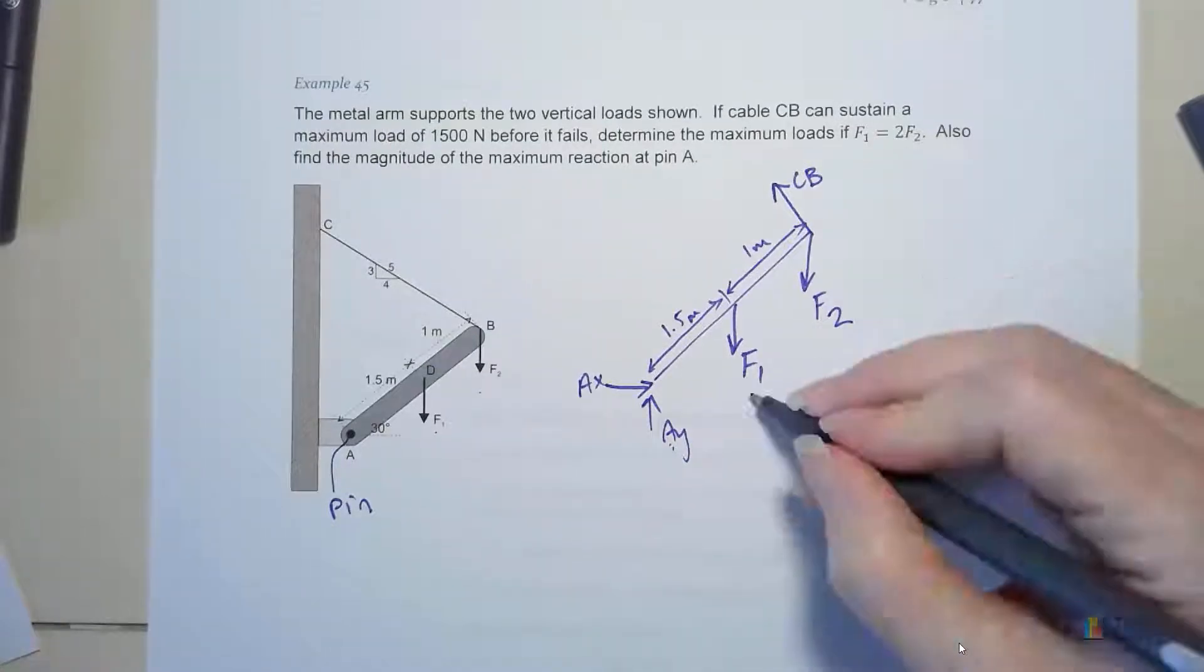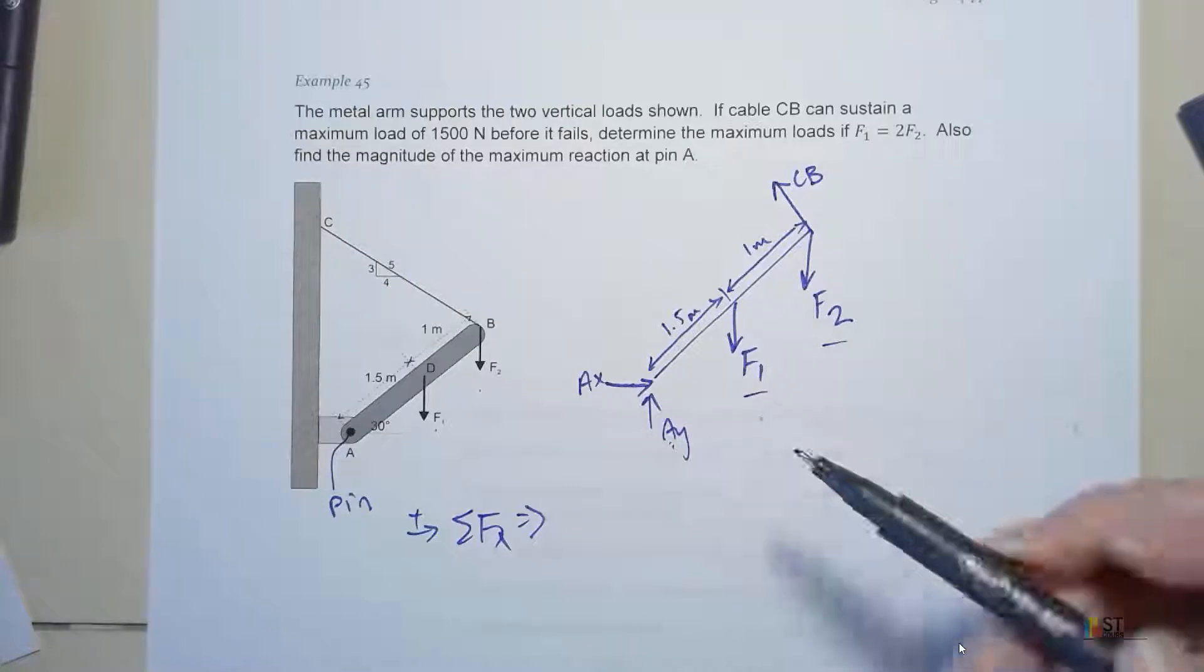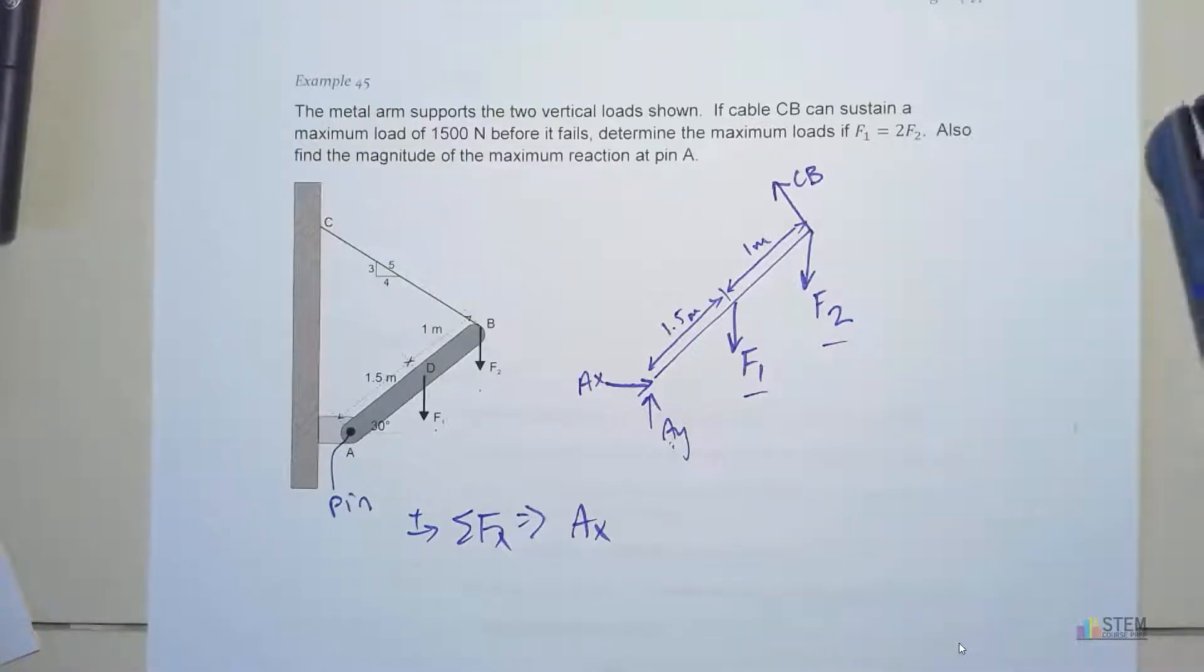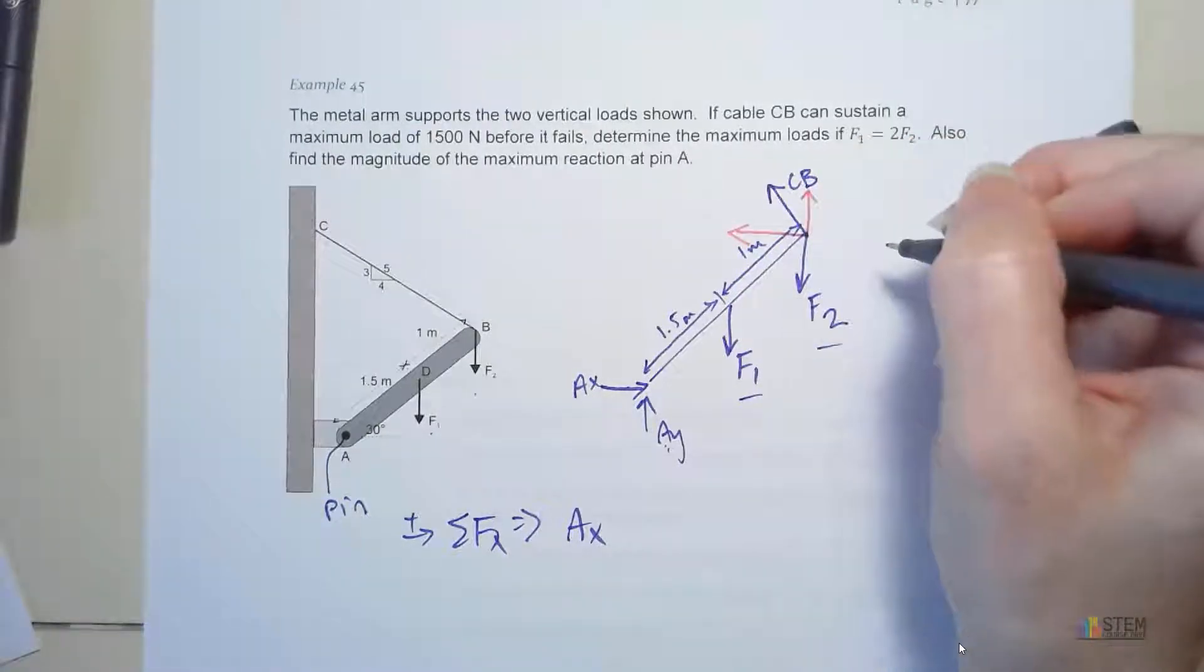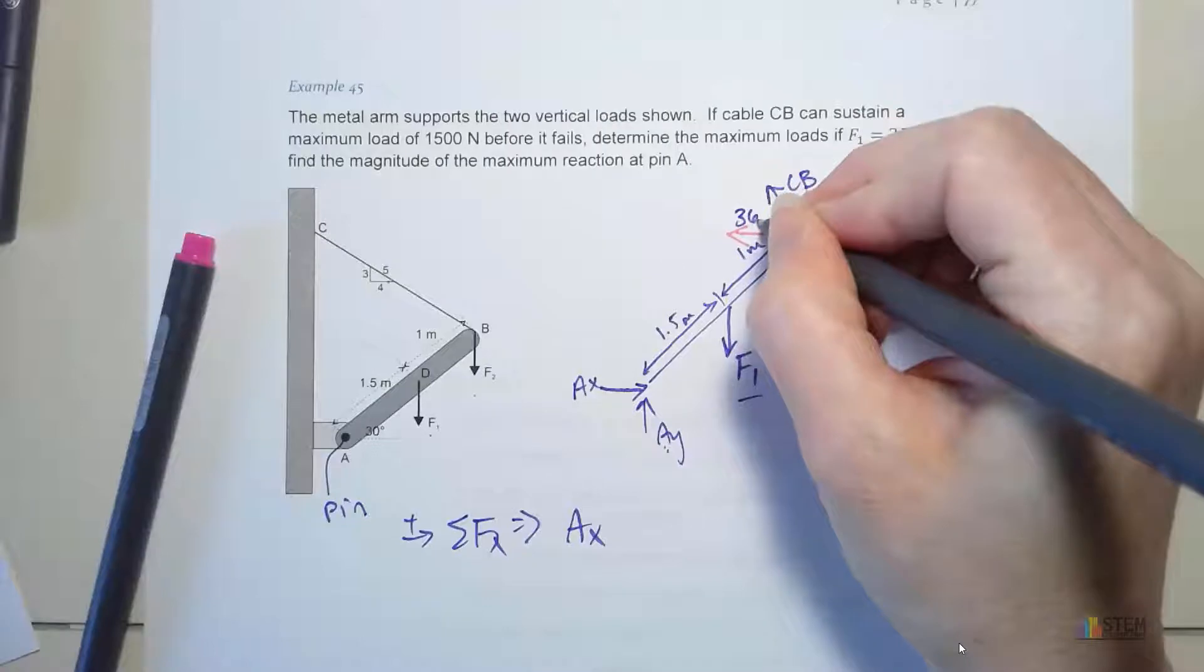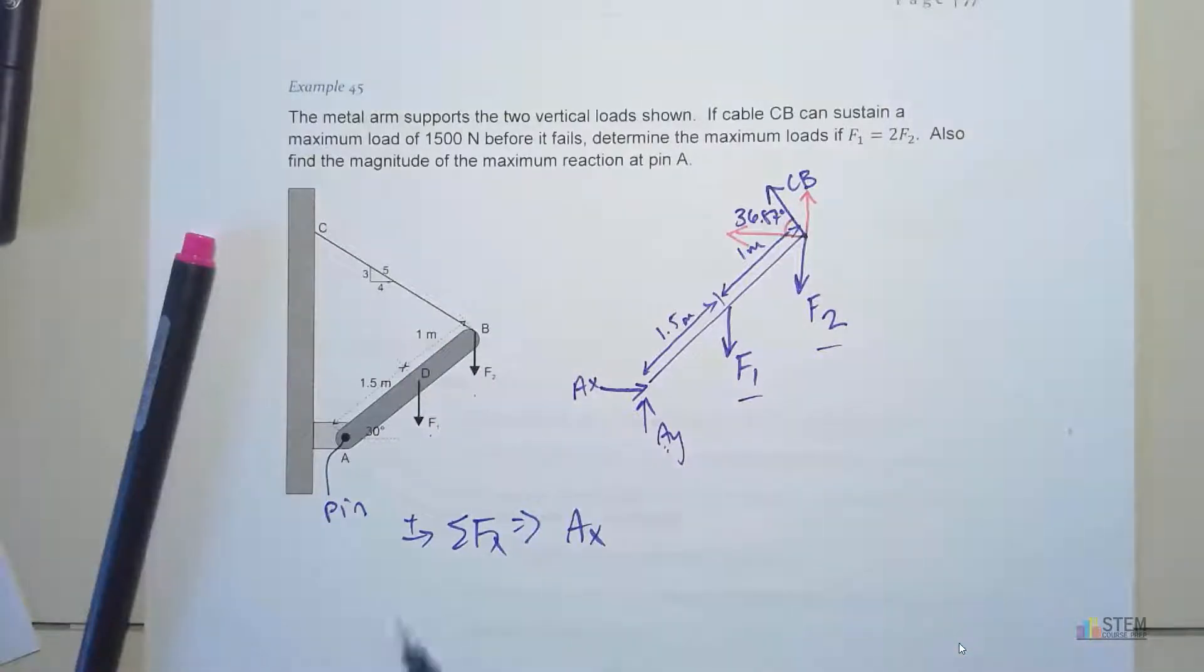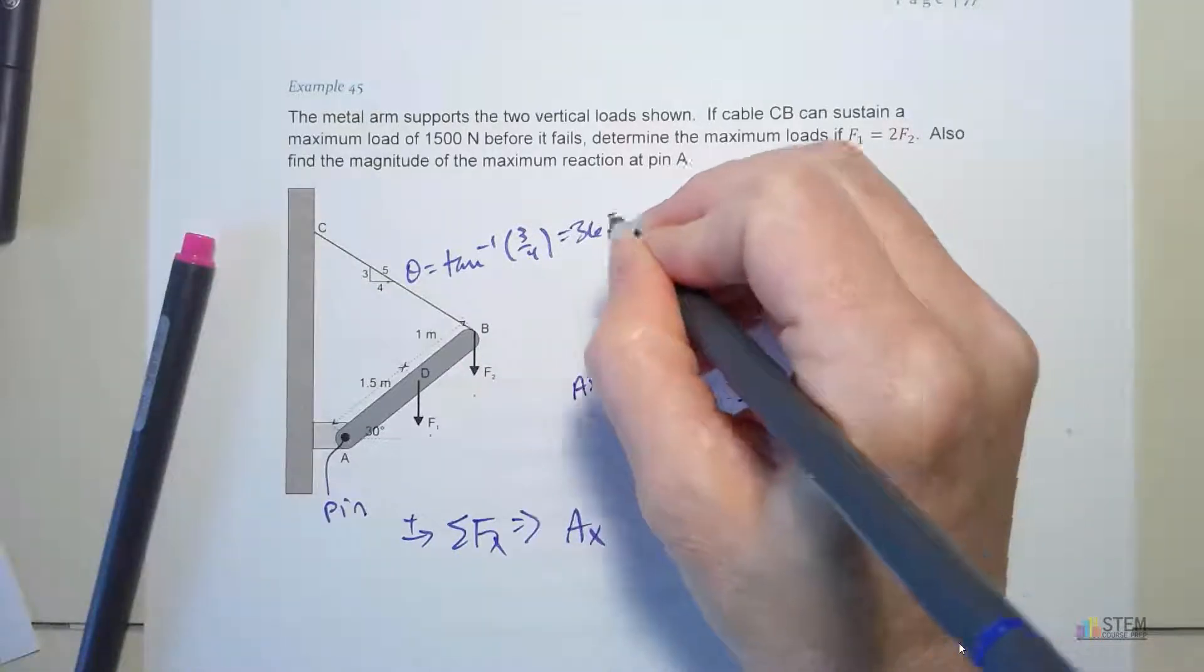Now we've got this. Let's look at our equilibrium equations. I'm going to say to the right's positive. We've got Ax in the positive direction, and then we've got CB over here. We need to find our angle because we've got the x component here and the y component right there. We can find that using this triangle. If you use that triangle, you'll get an angle of 36.87, just use the arc tangent of 3 over 4.